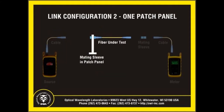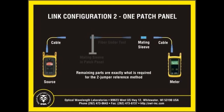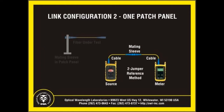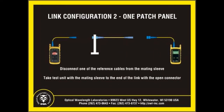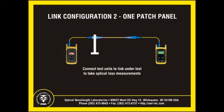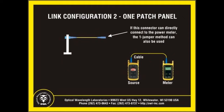The second link configuration has a patch panel on one end and an open connector on the other end. What remains from the test configuration is two test cables and a mating sleeve — exactly the pieces needed for the two-jumper method. Simply connect the power meter and light source together with the two test cables and mating sleeve to set the reference. Once the reference has been set, disconnect one of the test cables from the mating sleeve — it doesn't matter which one, as long as you leave both cables attached to their respective test units. Insert the link under test between the single cable and the mating sleeve to take measurements. Note that the one-jumper method can also be used here if the open connector on the fiber under test can directly plug into the power meter detector port.